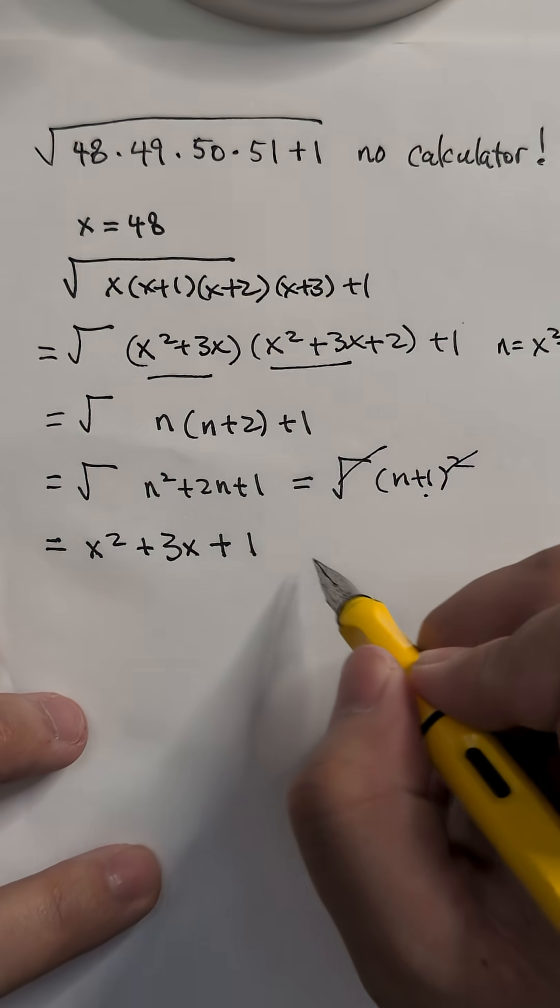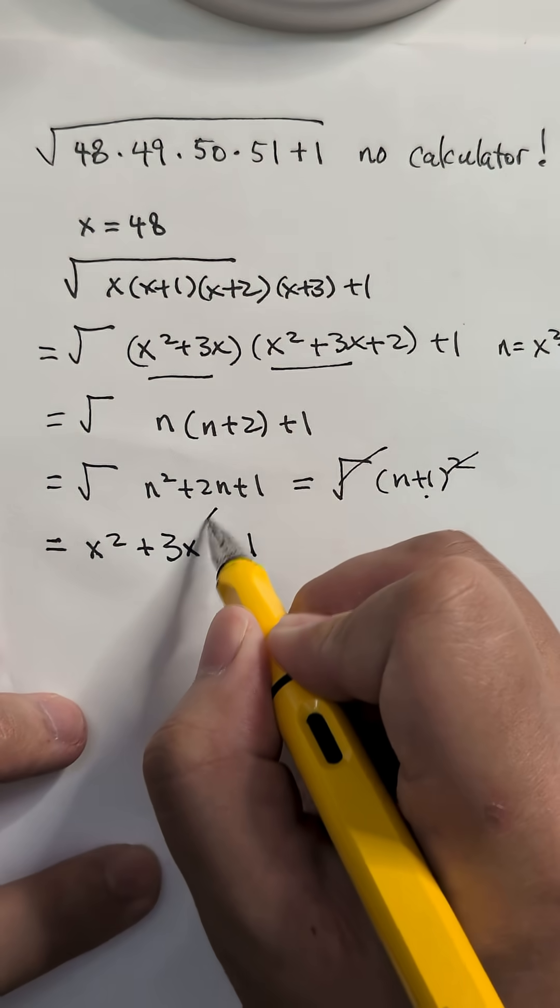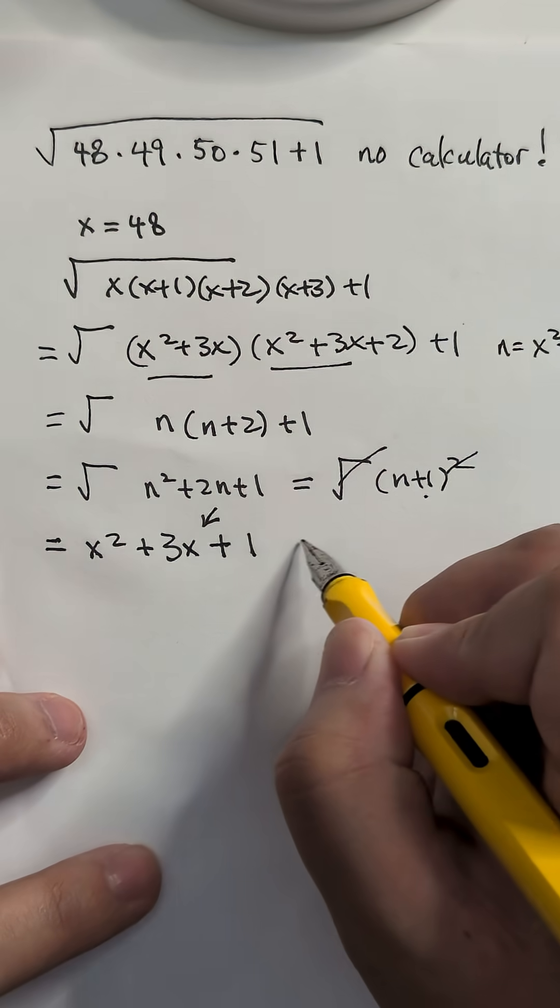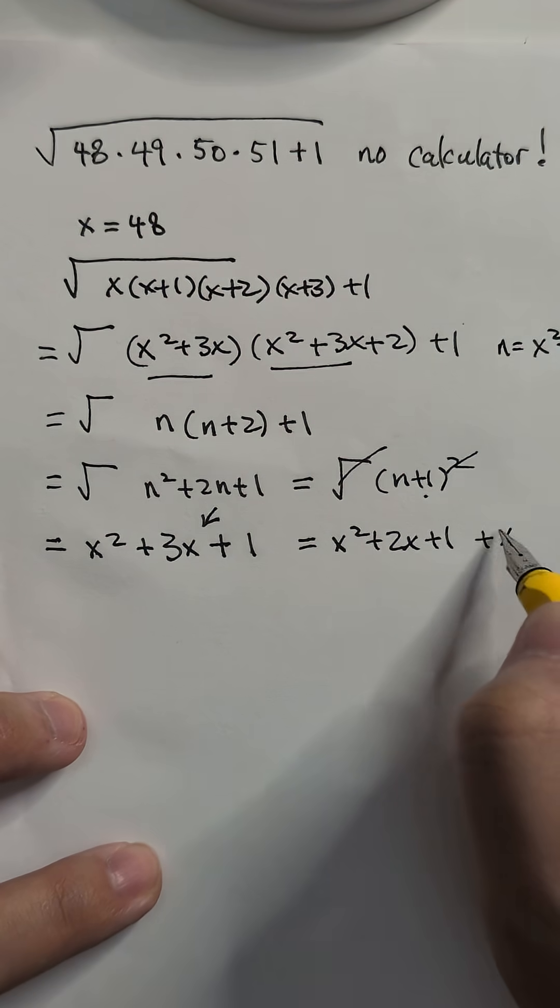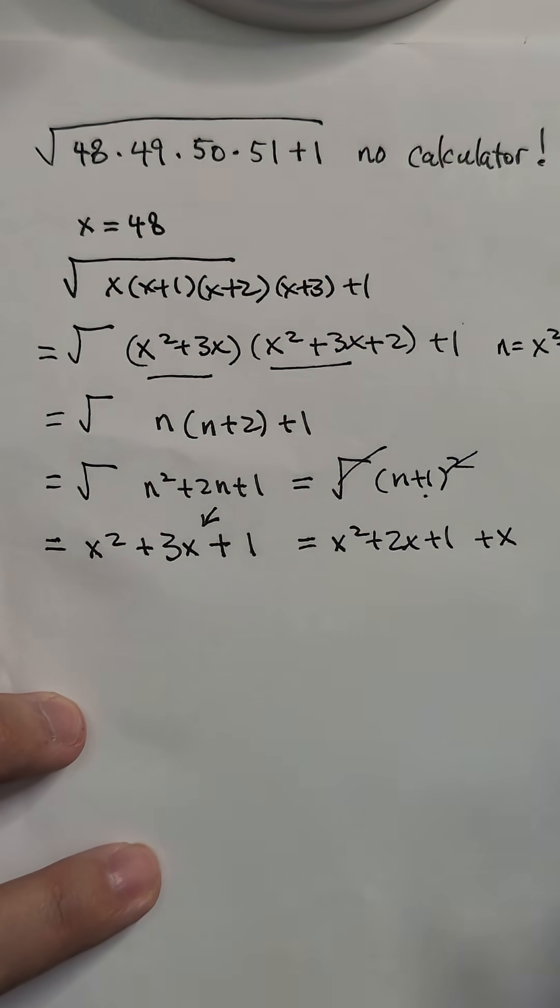So what is that actually? You can still calculate it out if you like. But since we already did it, we can actually substitute it out and call that x squared plus 2x plus 1 plus x. Take out one of the x from the 3x, right?